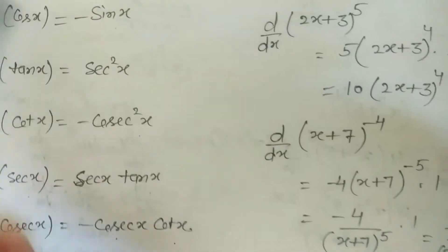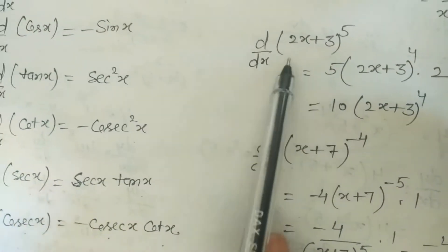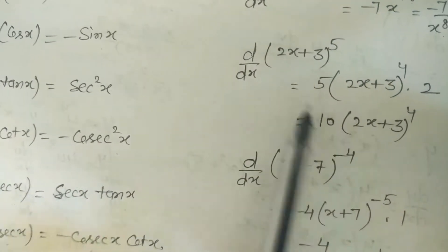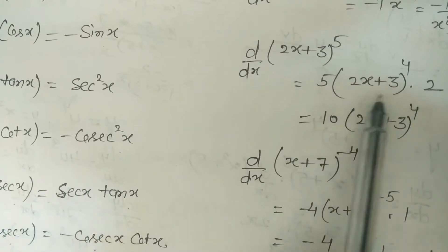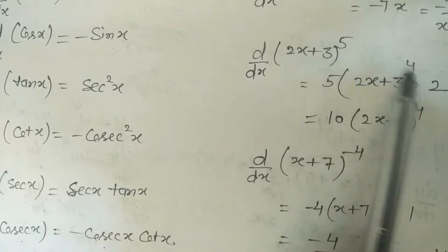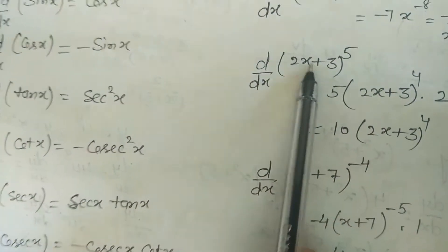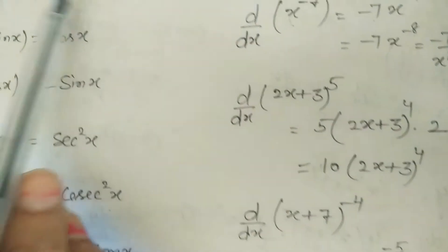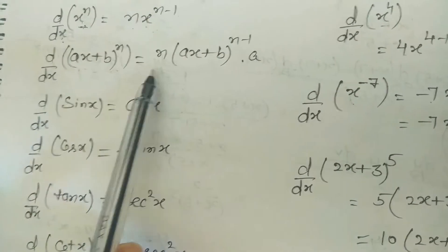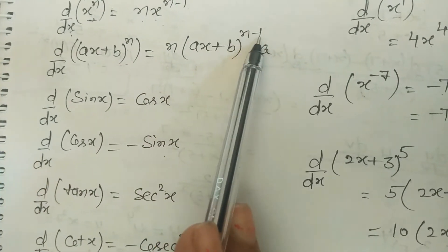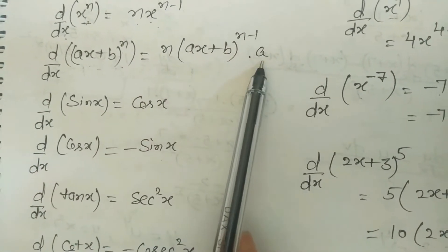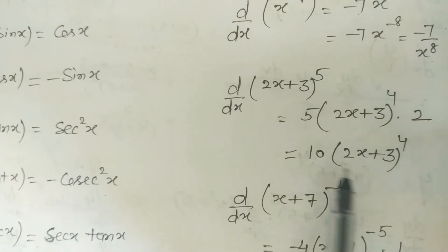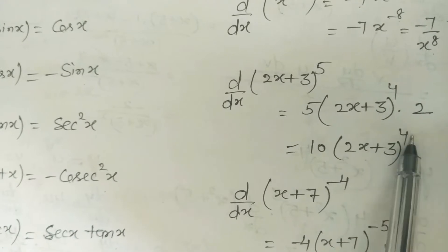Example: derivative of (2x+3)^5. Using the formula with n=5, a=2: 5·(2x+3)^(5-1)·2 = 10·(2x+3)^4.